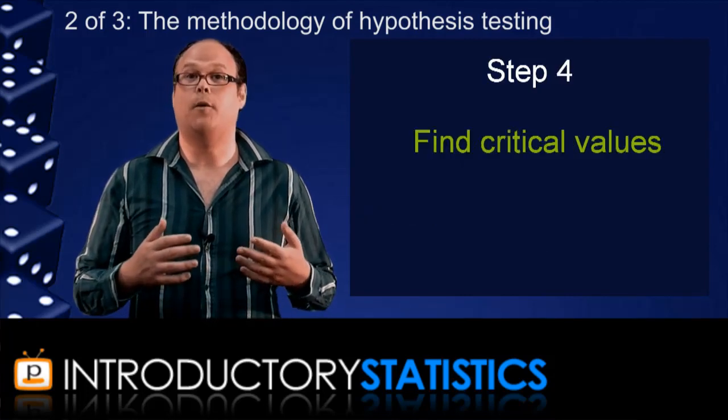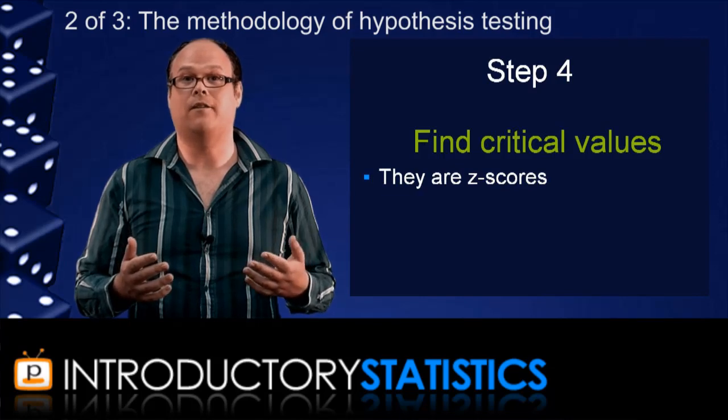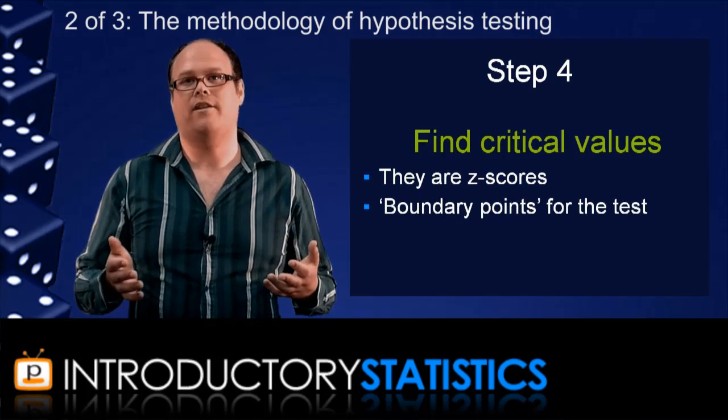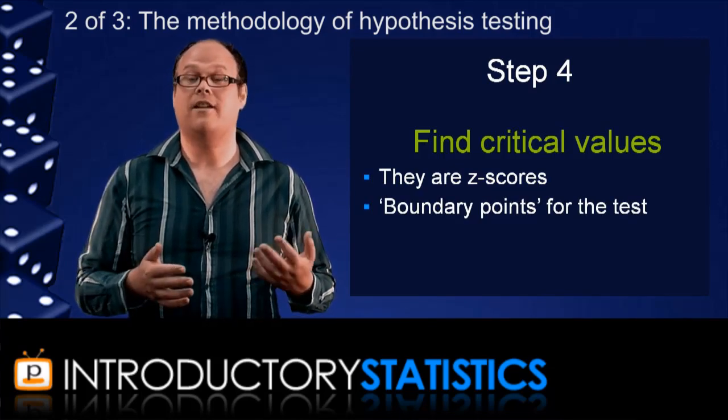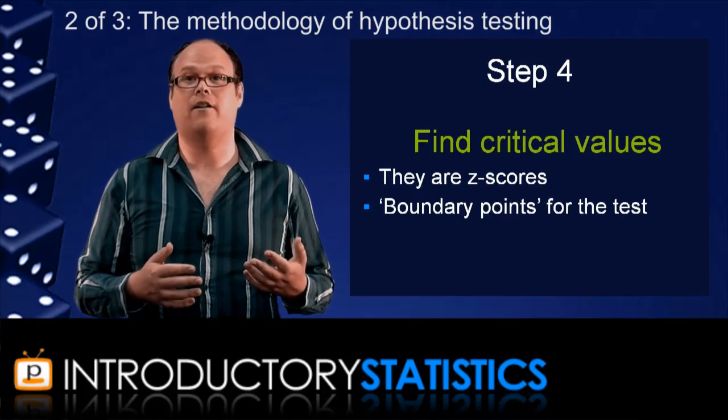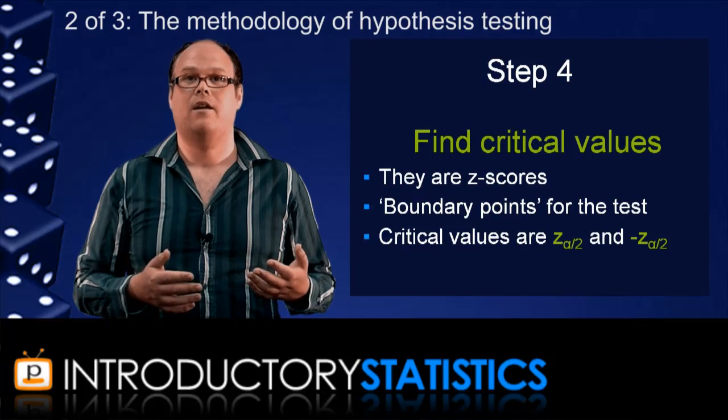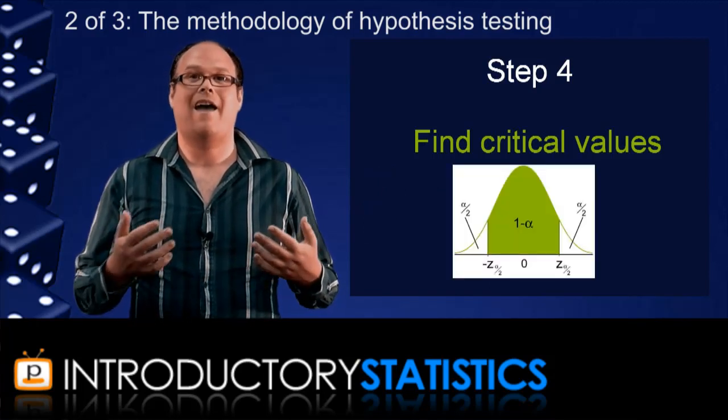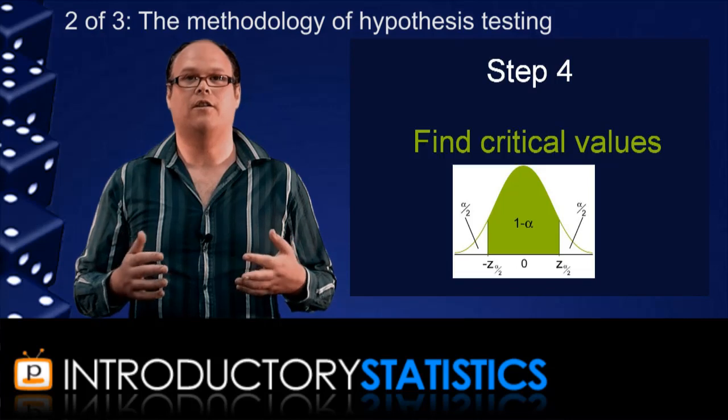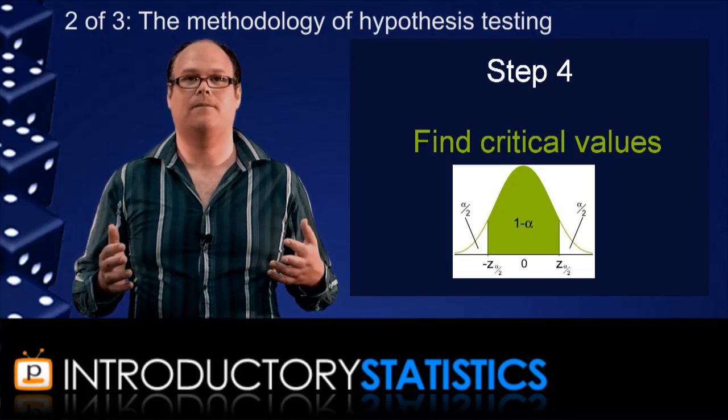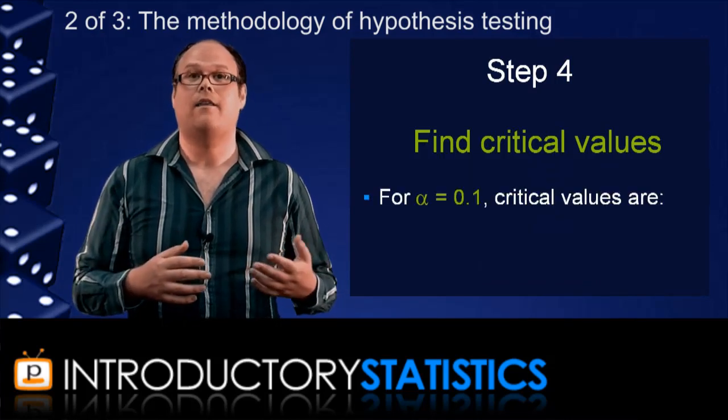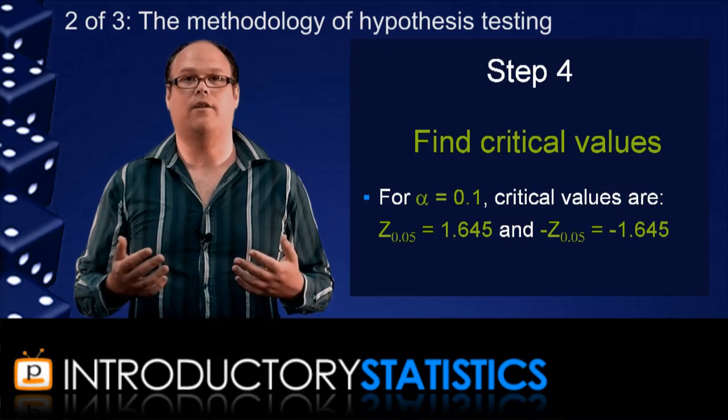Next, we determine the critical values. These are z-scores determined by the level of significance. They're like boundary points for your test. For a level of significance alpha, the two critical values are z sub alpha on 2 and minus z sub alpha on 2. These values are such that as a proportion, alpha of the standard normal distribution lies outside the critical values. For alpha equal to 0.1, the critical values are plus and minus 1.645.